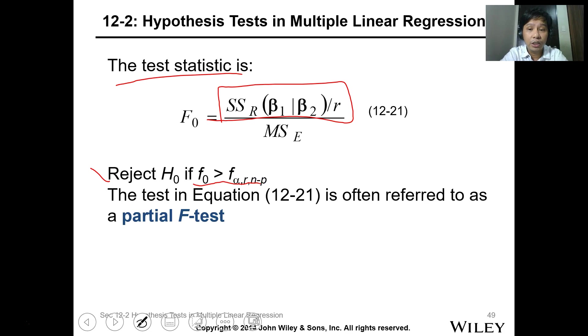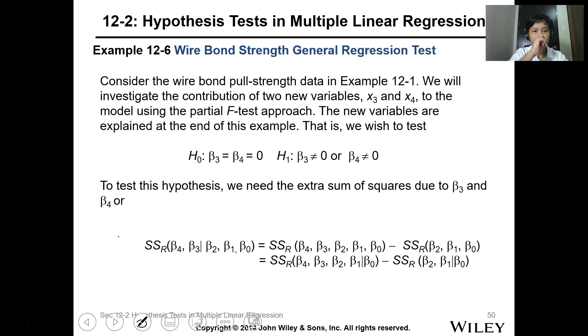The test equation is often referred to as the partial F-test. For the example, let's consider the wire bond again and there is a new variable which is x3 and x4 that are modeled using partial F-test approach.